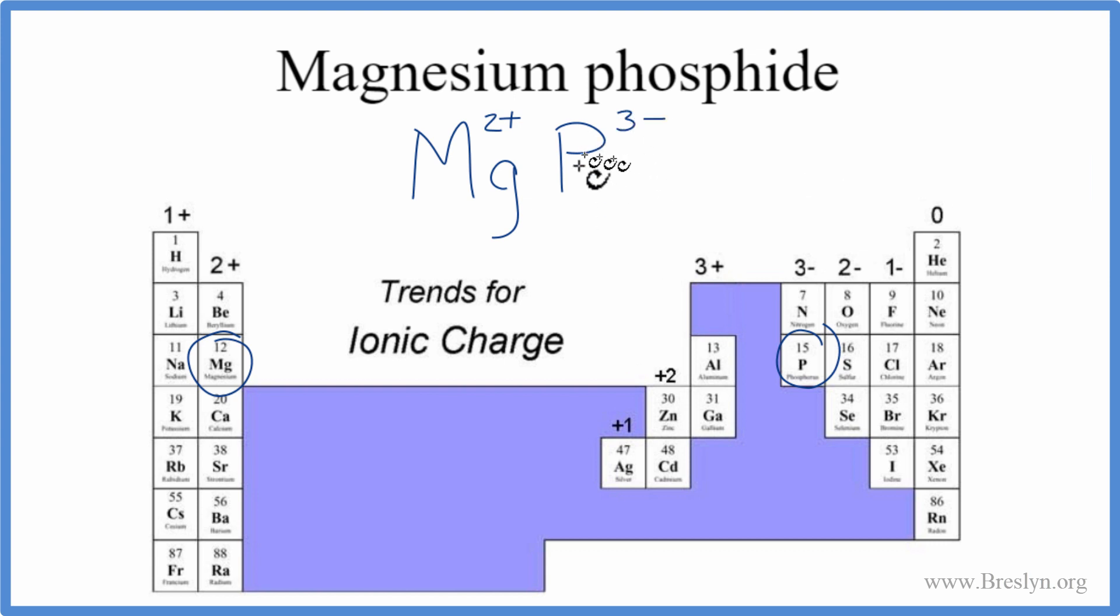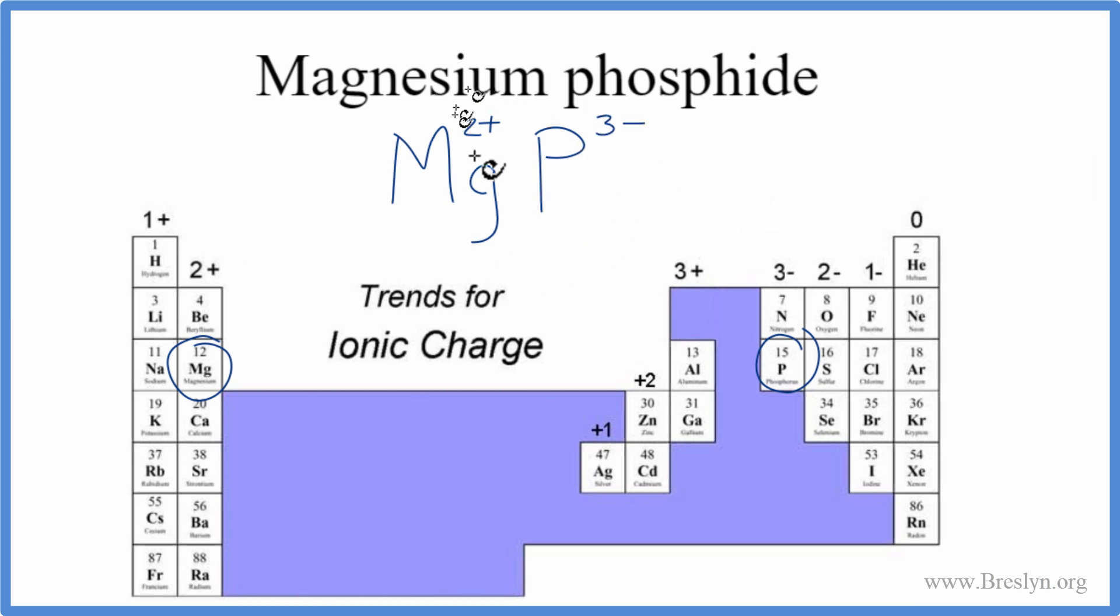So right now, we have an imbalance in the ionic charge. These charges need to add up to 0. The net charge needs to be 0. Right now, they don't.